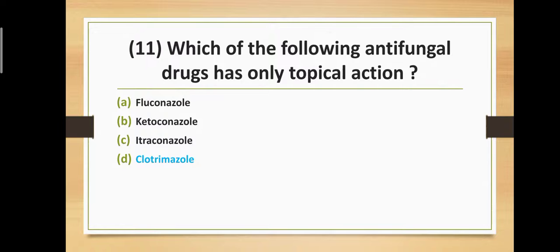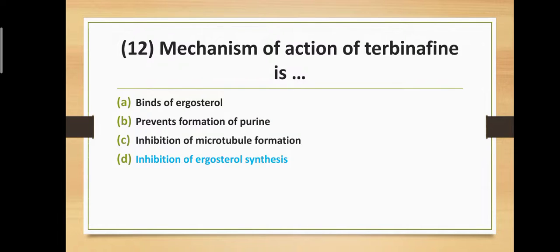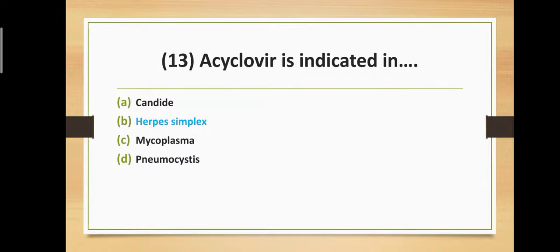Question number twelve: What is the mechanism of action of terbinafine? Option A: binds to ergosterol, Option B: prevents formation of purines, Option C: inhibition of microtubule formation, Option D: inhibition of ergosterol synthesis. The correct answer is Option D — terbinafine acts by inhibition of ergosterol synthesis.